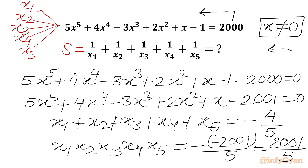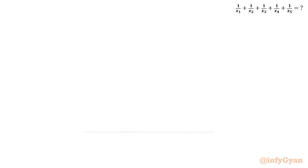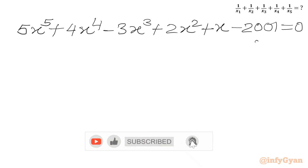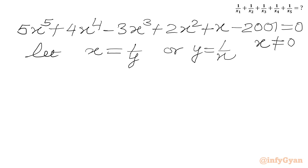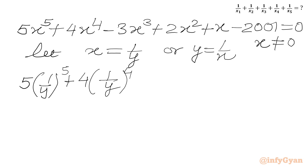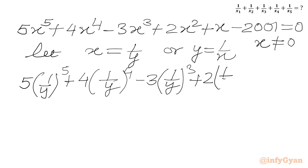Now we are going to use a substitution. I will write the equation once more. For our equation, x cannot equal 0. We consider x equal to 1 over y, or equivalently y equal to 1 over x. Substituting x equal to 1 over y, we can write 5 times (1 over y) to the power 5 plus 4 times (1 over y) to the power 4 minus 3 times (1 over y) cubed plus 2 times (1 over y) squared plus 1 over y minus 2001 equal to 0.